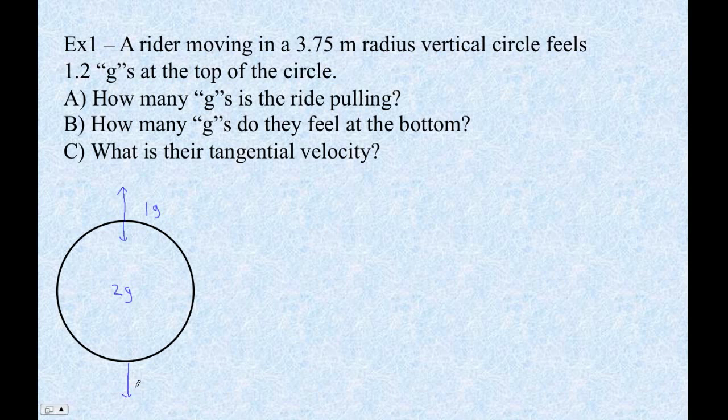And then at the bottom, of course, you'd have the same 2 g's of centrifugal g-force plus a g of gravity. So here you'd actually feel 3 g's. So in general, what it is, is that it's always the ride minus a g at the top, and it's always, at the bottom, it's always the ride plus a g. So we can solve this thing. If you feel 1.2 g's at the top, that means the ride really is 2.2 g's. And then at the bottom, we'd feel 3.2 g's.